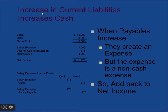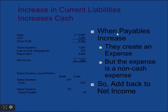An increase in current liability increases cash. For example, salary expense of $875 is paid in cash, and then a salary payable of $125 is recorded — so $125 is salary payable. When payable increases, increase the cash. Whenever payable increases, we add this back to net income to get operating cash flow, because when payable increases they create an expense but the expense is non-cash — so add back to net income.